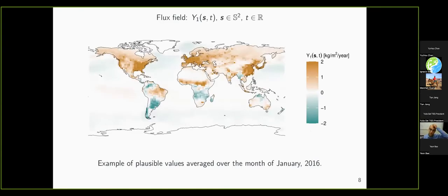Let's start talking about the main model in WOMBAT. We have a multivariate spatial-temporal process, because we have two spatial-temporal processes of interest. The first, called the flux field, represents the sources and sinks of carbon dioxide in units of kilograms per meter squared per year. We've taken a plausible flux field and averaged it for a whole month. In January, you can see that the northern extratropics — where trees have lost their leaves and there's not a lot of sun — actually have a net sink. In summer, this will become a net sink of carbon dioxide.